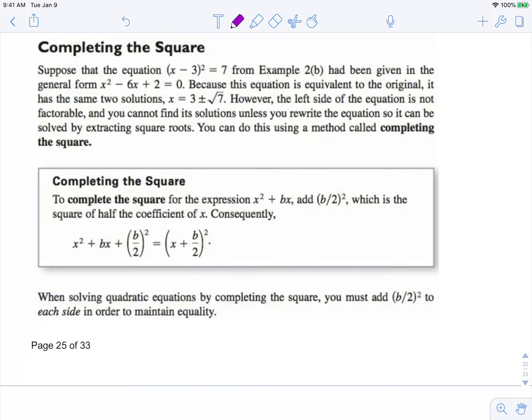Completing the square. Suppose that the equation that we just solved, x minus 3 squared equals 7, had been given in the general form x squared minus 6x plus 2 equals 0.